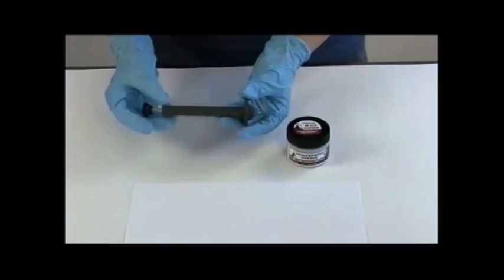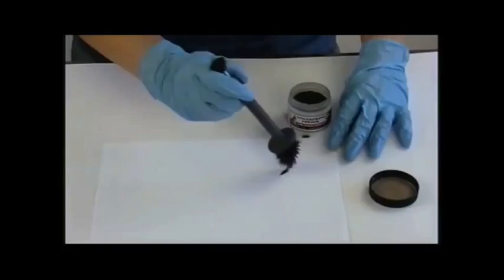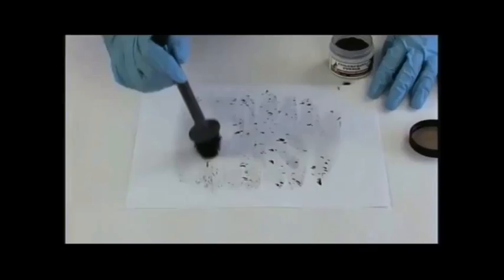The magna brush is a wand that uses magnetism to attract the powder. The powder is then spread around the area and it attaches to the fingerprints that are left behind because of the iron.